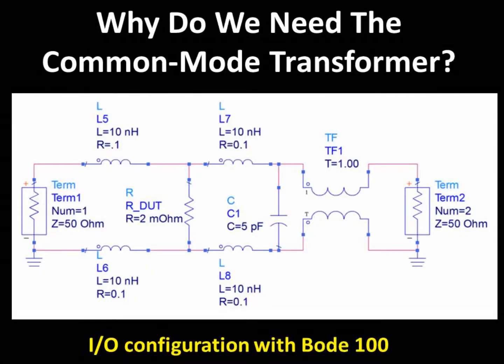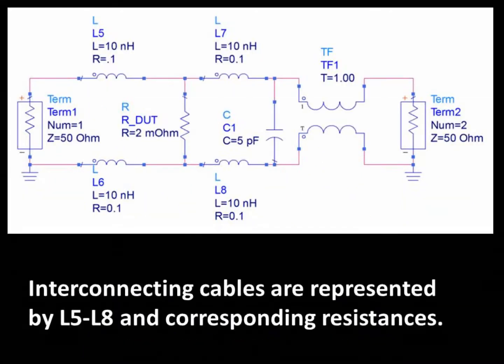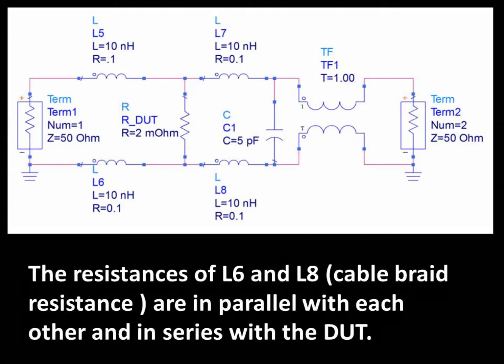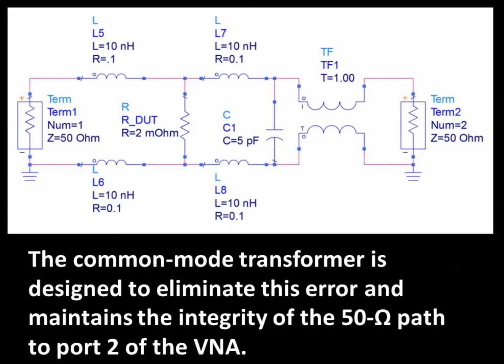Here we have a model of the two-port VNA test setup in which the cables are modeled with inductances and resistances. In the schematic, you can see that the two ports are connected as a true RF ground at the front panel of the analyzer. The two connecting cable shields are connected together at this RF ground and are also connected together at the device under test or DUT. This creates a DC ground loop with the cable shields in parallel with each other and in series with the DUT, so that the shields become part of the measurement. Adding the common mode transformer allows some AC float to eliminate this ground loop. The J2102A common mode transformer provides very high permeability while maintaining true 50-ohm transmission line characteristics up to approximately 500 MHz.